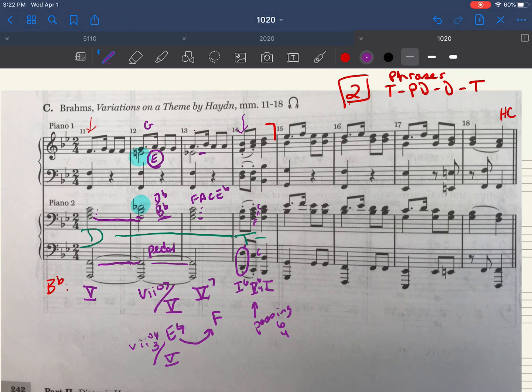I can move on to measure 15 looking at what I have. I have an E flat in my top voice. I have B flats, G's throughout. I have G's, E flats, B flats in that piano two part. So the root of this chord is E flat. E flat is four in my B flat key and it's in first inversion.